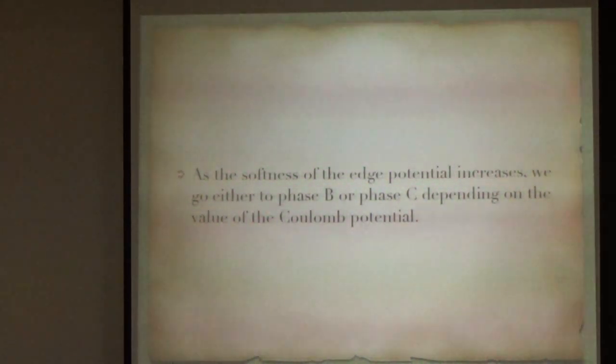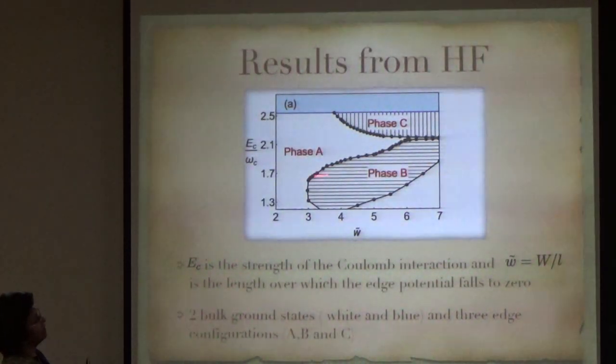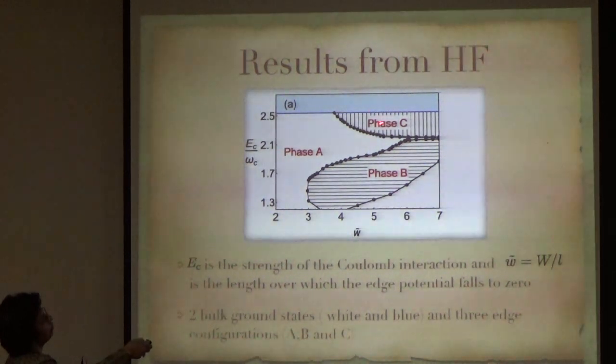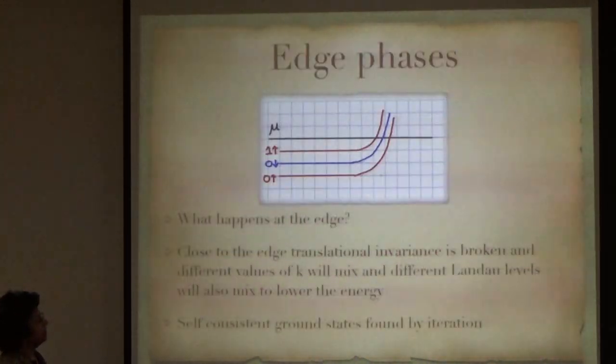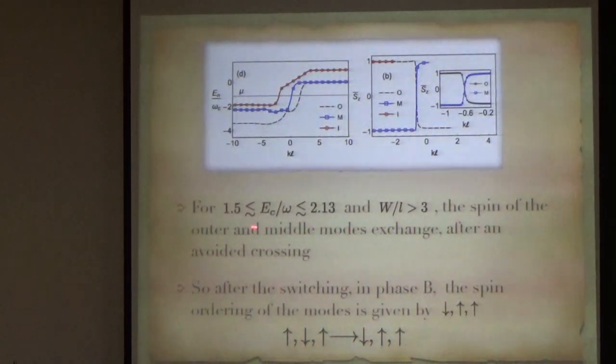But, as the softness of the edge potential increases, one will go to either phase B or C. For, when the Coulomb interaction is below this, you go to phase, from phase A to phase B, as you soften it. And, when the Coulomb interaction is above this level, you go from phase A to phase C, depending on the value of the Coulomb potential. So, for 1.5 is less than E_c by omega is less than 2.13. And, for this value, what you find is, the spin of the outer and middle modes exchange after an avoided crossing.